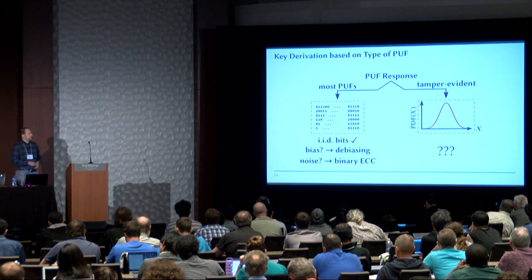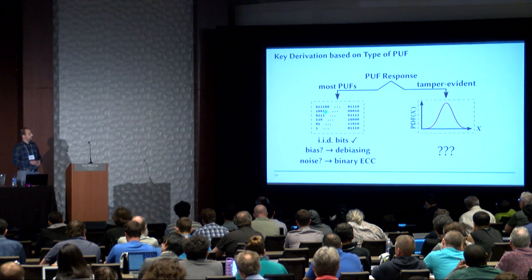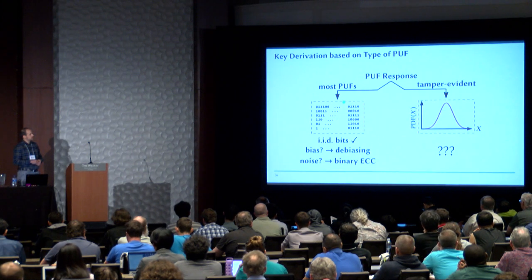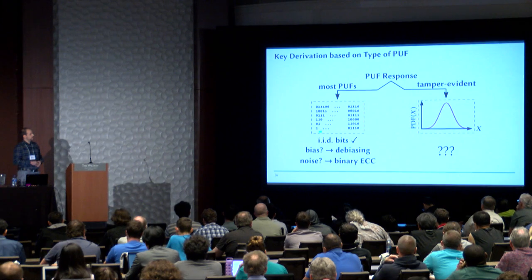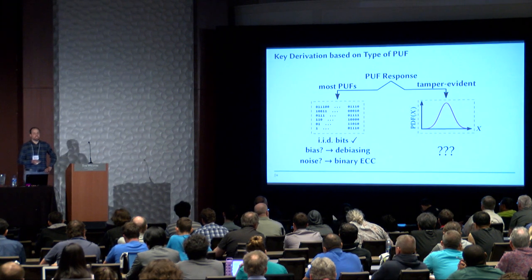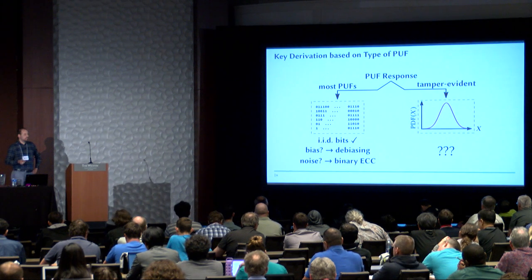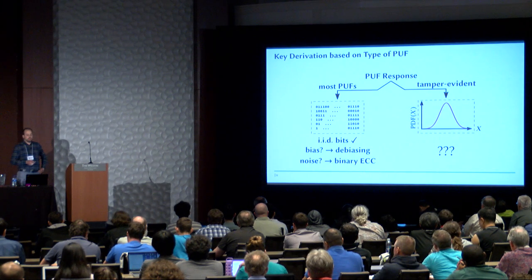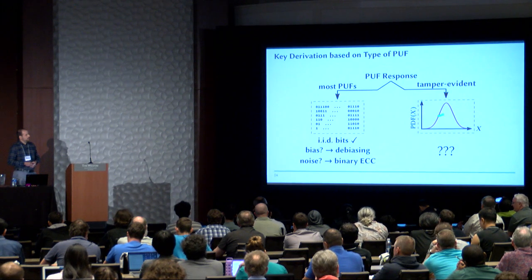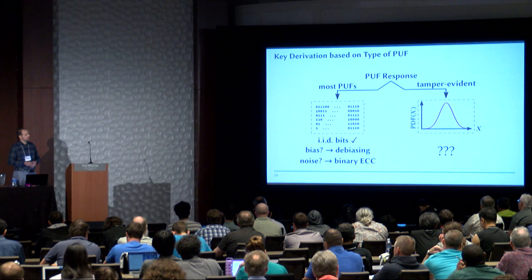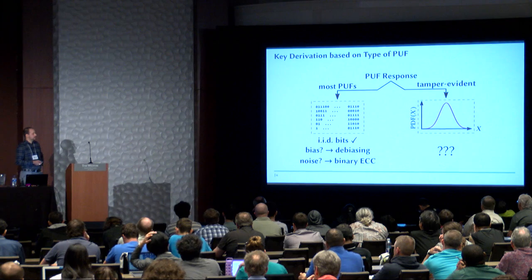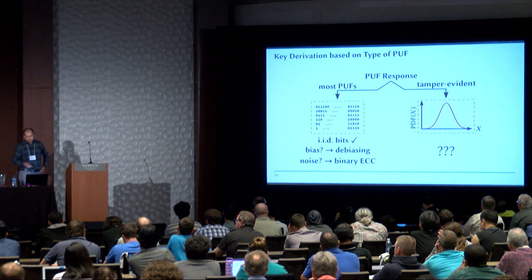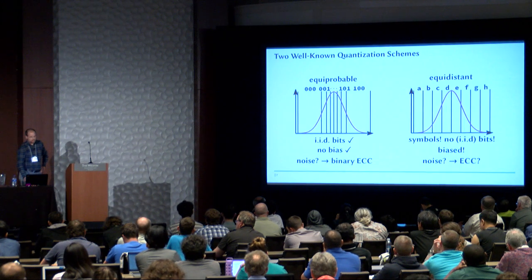When it comes to key derivation, we have two scenarios: the binary PUF response case and the tamper-evident case. In the binary case, an assumption typically made is that the PUF bits are IID. If there is some bias, we can do de-biasing, and if there is noise, we apply a binary ECC construction such as fuzzy commitment or code offset. For the almost continuous or quasi-continuous case for the tamper-evident PUF, the question is what is the best approach. As an engineer, you might think to apply ECC, but first we start using quantization.